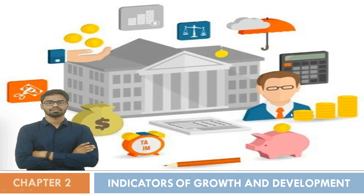By the end of that part we started with a new part which consists of four different indicators of growth. Economic development and economic growth are divided into four different indicators, with the help of which you can measure everything. The four indicators are: first, growth rate of national income; second, growth rate of per capita income; third, PQLI — Physical Quality of Life Index; and fourth, Human Development Index.